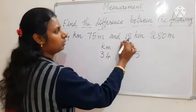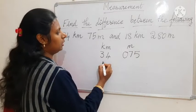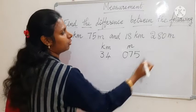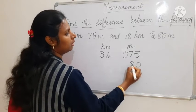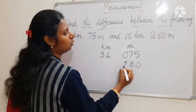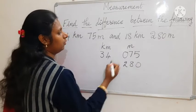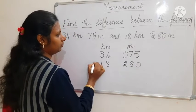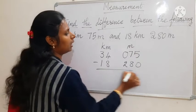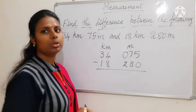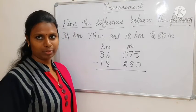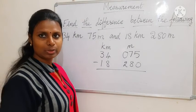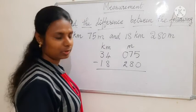Now for the next number: in m we write 0, 8, 2 — that is 082 — and for km we write 8, 5 — that is 85. Then as usual you are going to subtract.